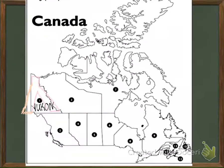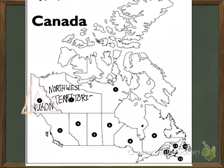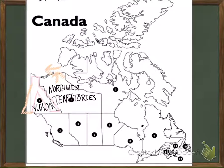Next to the Yukon, you have Northwest Territories. The easiest way to think about that is, well, it's in the north and it's on the west side of Canada. It can't be on the far west because you have your upside-down Y.